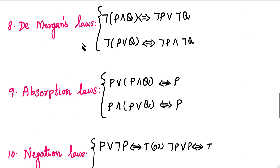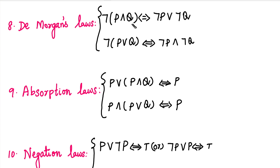At De Morgan's law: negation of (P AND Q) is equivalent to negation P OR negation Q. Similarly, negation of (P OR Q) is equivalent to negation P AND negation Q. So the connective changes when negation is distributed inside.